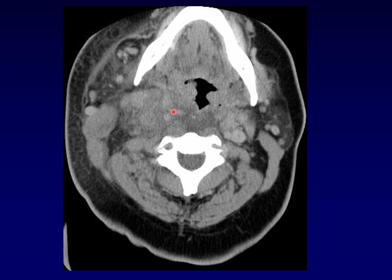This is a classic appearance for a phlegmon. Here we see no enhancing rim around the collection — there are a few foci of enhancement, but these are displaced vessels. There's no true wall around this collection. Although the central area is of low attenuation, it's not as low attenuation as the abscess we were just looking at. One of the most important features here is the configuration of this collection — it retains a more or less rectangular configuration reminiscent of the normal shape of the potential retropharyngeal space. So this is a canonical example of a retropharyngeal space phlegmon.